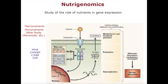PPAR stands for peroxisome proliferator-activated receptor, which has a region specific for fatty acid. Then you have CHREBP, which is specific for carbohydrate — that is, carbohydrate response element binding protein. For example, if your nutrient is a micronutrient such as vitamin D, then the transcription factor will be the vitamin D receptor. So likewise you have different transcription factors for different nutrients.